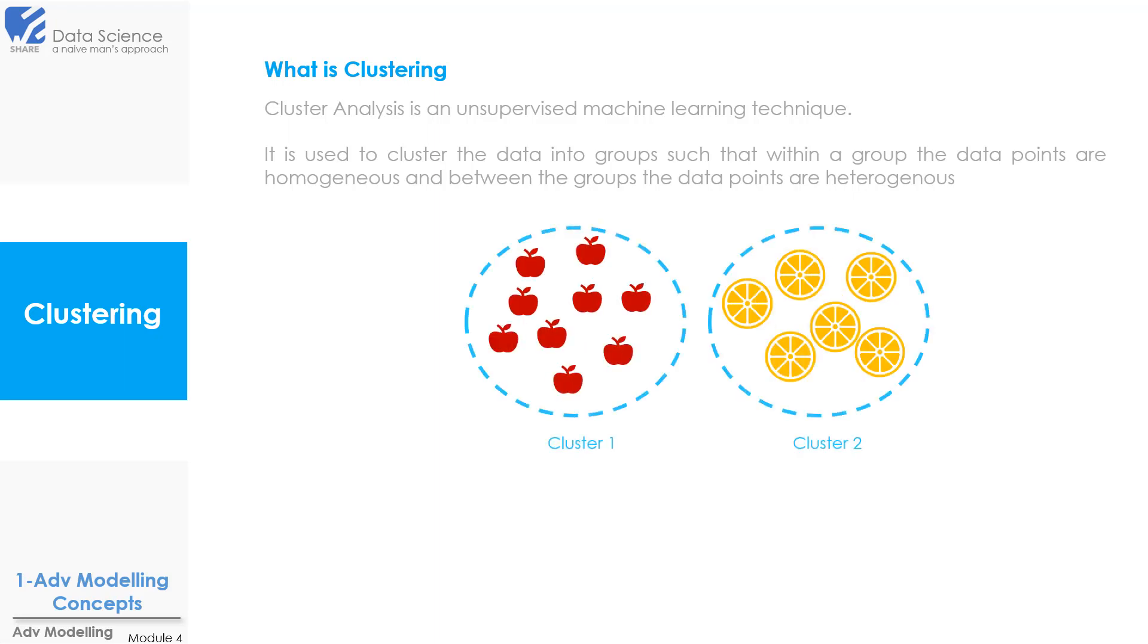Let's say we have apples and oranges. Cluster analysis will make clusters such that we have one cluster of apples and one cluster of oranges. Now to do this we cluster the data around the centroid of the cluster.